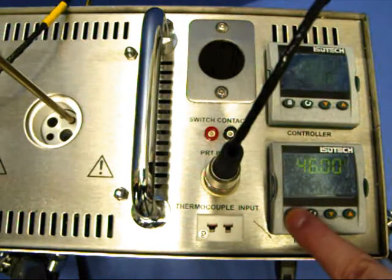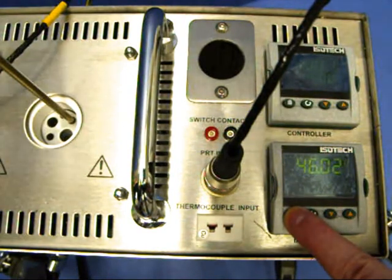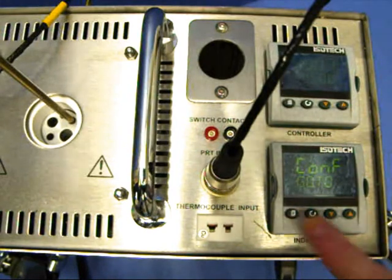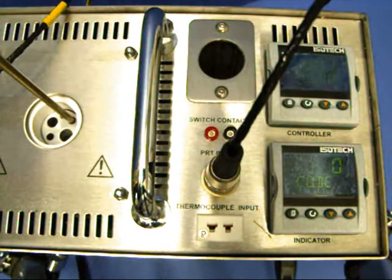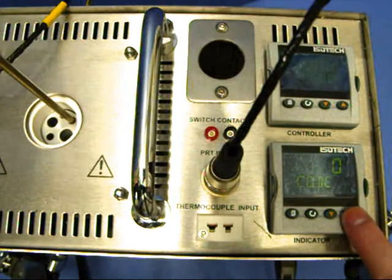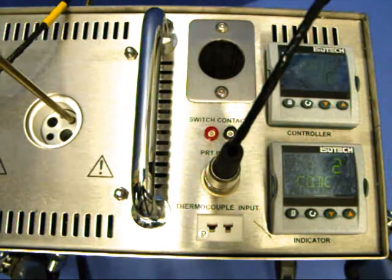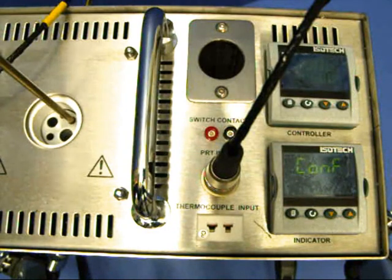Hold the page key down until the upper display indicates CONF GO TO. Then zero code. Set the code to 2 using the up key. The display will then read CONF.